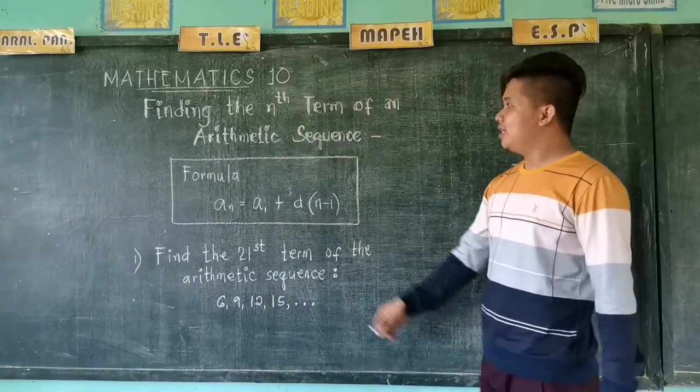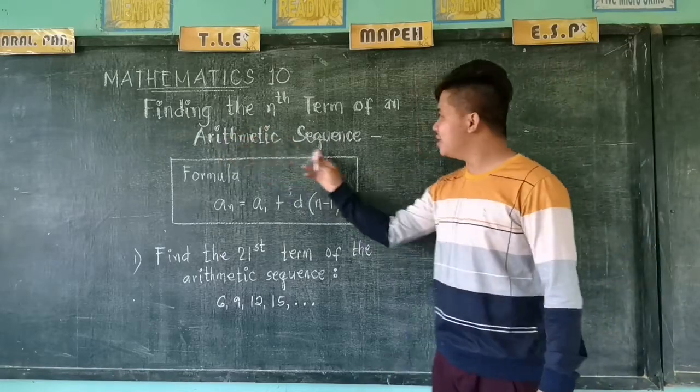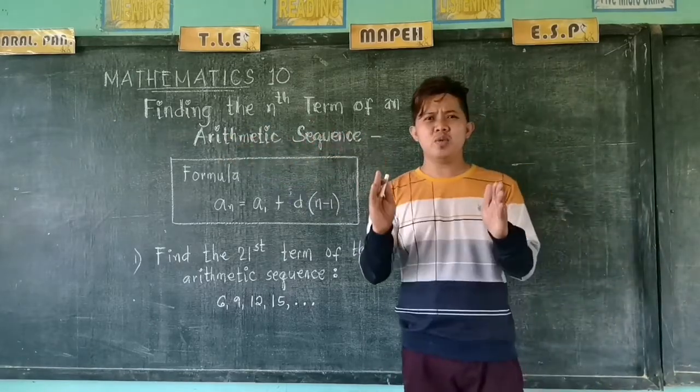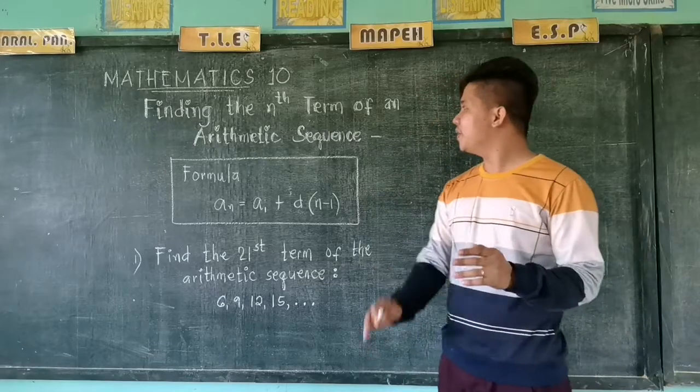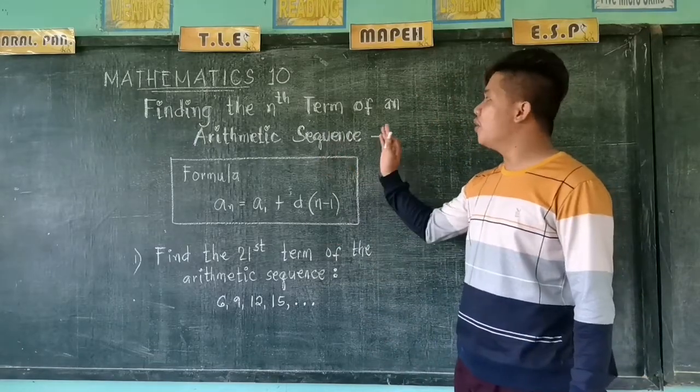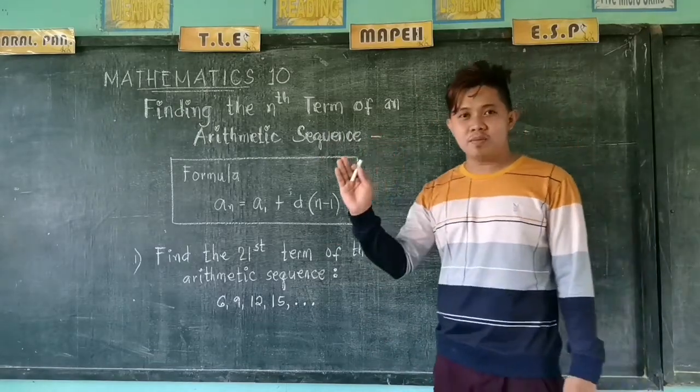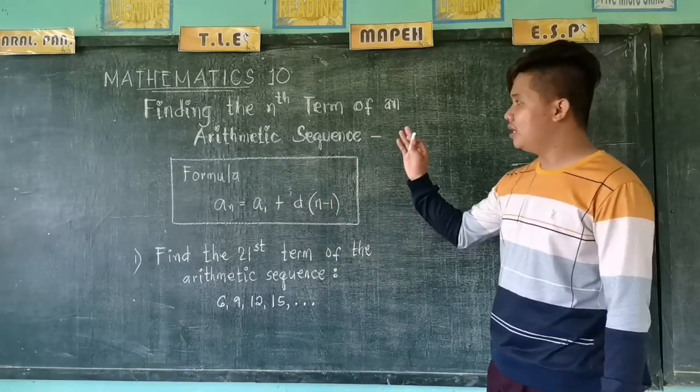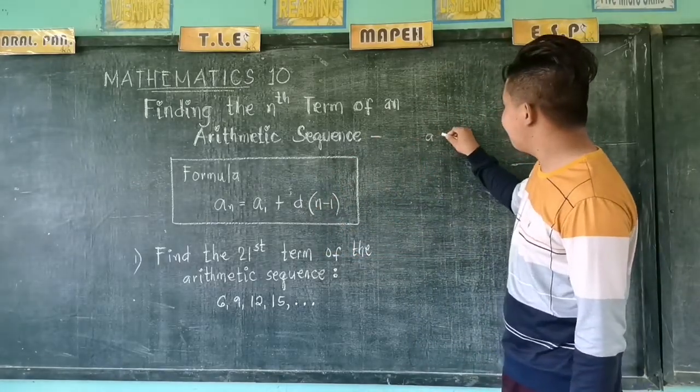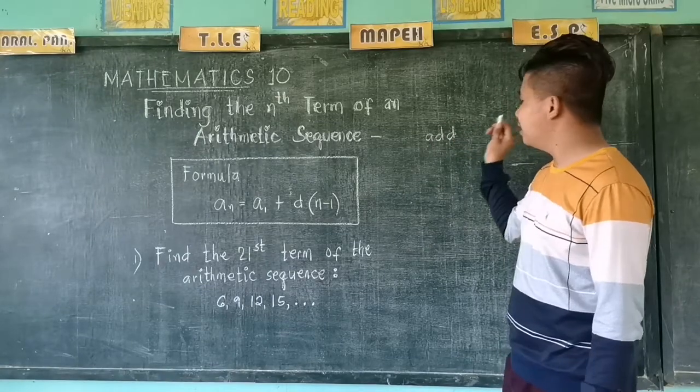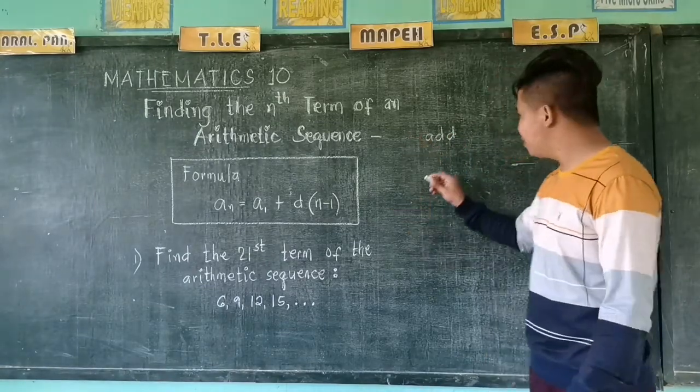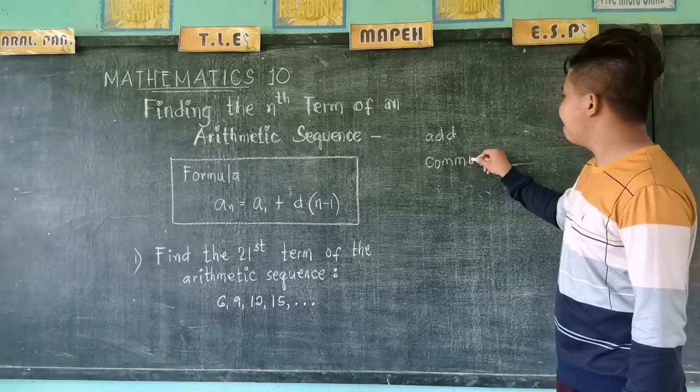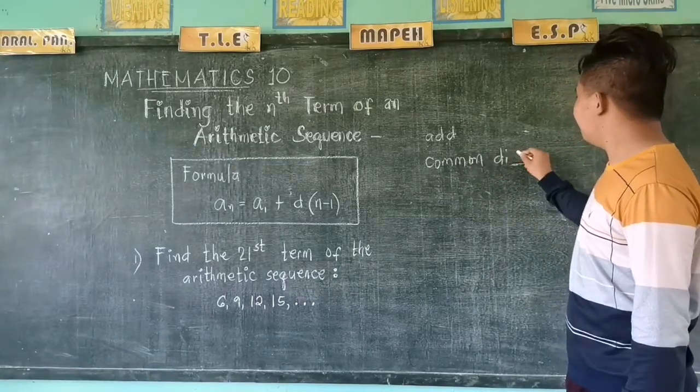Let's first define what an arithmetic sequence is. When we say arithmetic sequence, it is a sequence wherein the next terms can be obtained by adding a constant called the common difference.